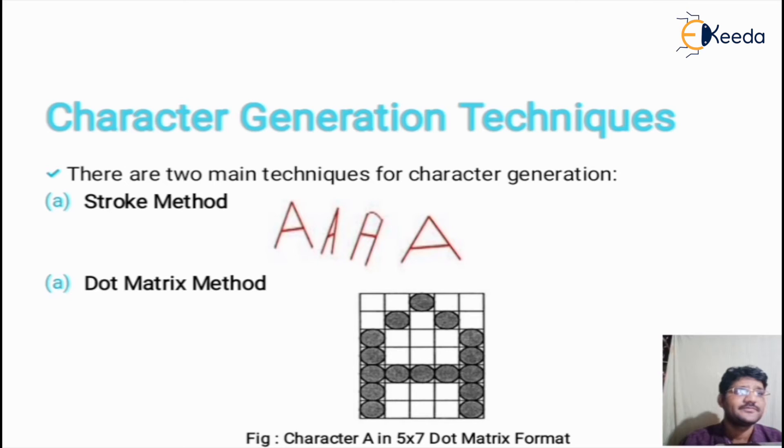In the given figure, you can see a character in 5 cross 7 dot matrix format, where 5 pixels in row and 7 pixels are in column. Although, 7 cross 9 and 9 cross 13 arrays can also be used. Higher resolution devices may use character arrays up to 100 cross 100.